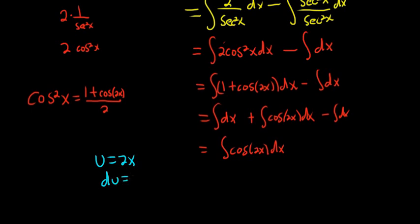So du is 2 dx. And you'll notice there's no 2 in the integrand, so we divide both sides by 2. So we have 1 half du equals dx. So we just replace dx with 1 half du. So we get 1 half cosine u du.